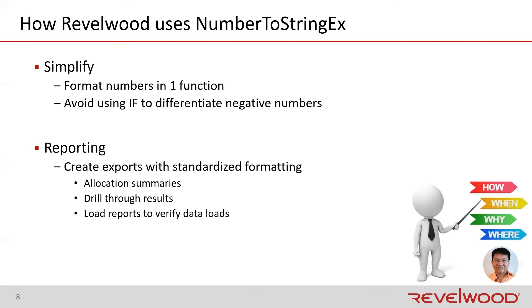Because it uses the same conventions as Excel, you can format negative numbers within the numberFormat parameter simply by using a semicolon to separate the positive and the negative formatting. For those who used numberToString for number conversions in the past, you no longer need to use an if statement to separate positive formatting versus negative formatting.